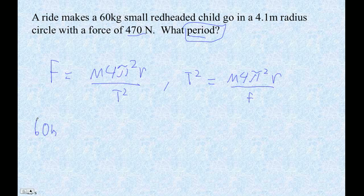So it's 60 kilograms times 4 pi squared times 4.1 meters, okay, divided by the force, 470. This is going to equal t squared, right? So let's see, 60 times 4 times pi squared times 4.1 divided by 470.